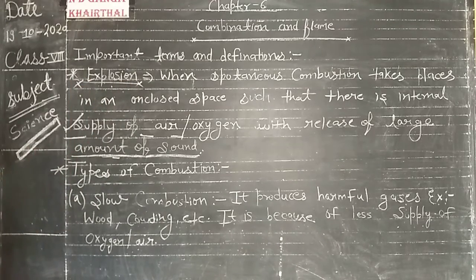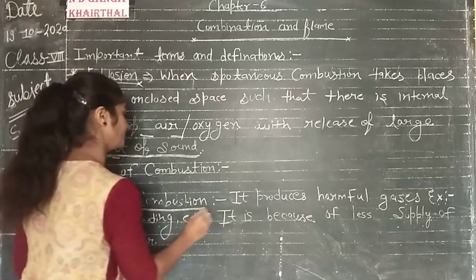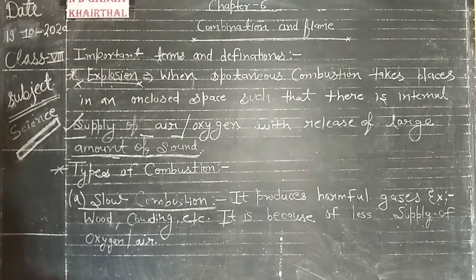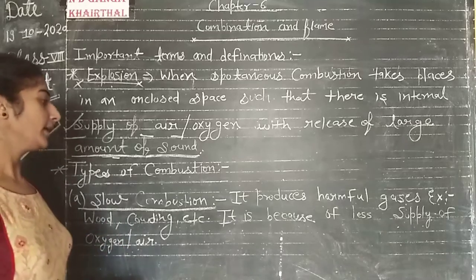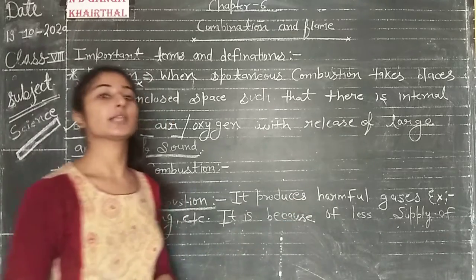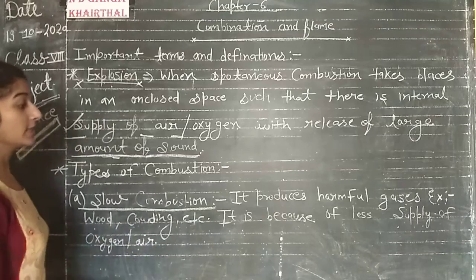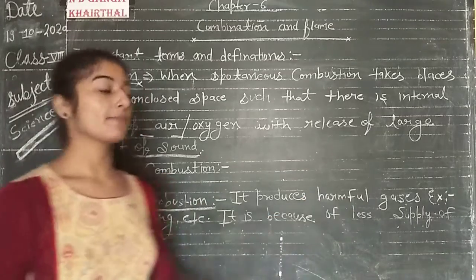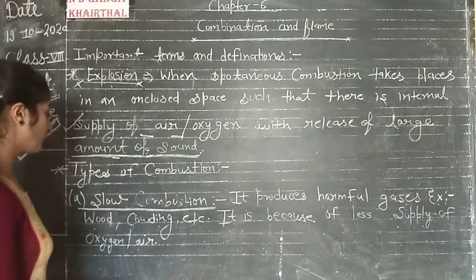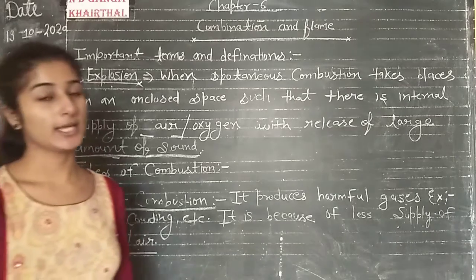Types of combustion. Slow combustion produces harmful gases. It occurs because of less supply of oxygen and air. Because of less supply of oxygen and air, harmful gases are produced.